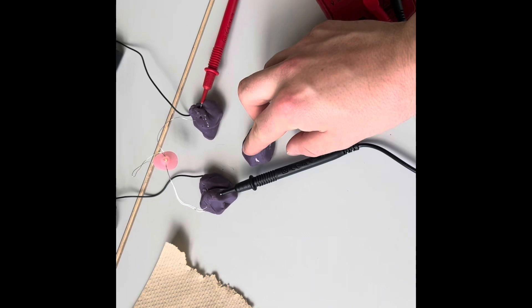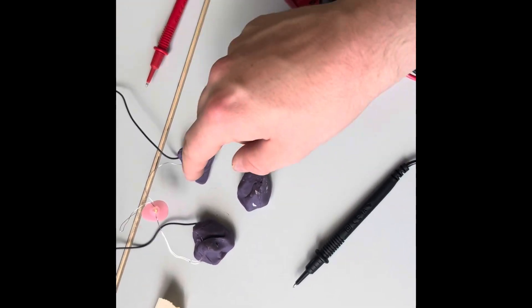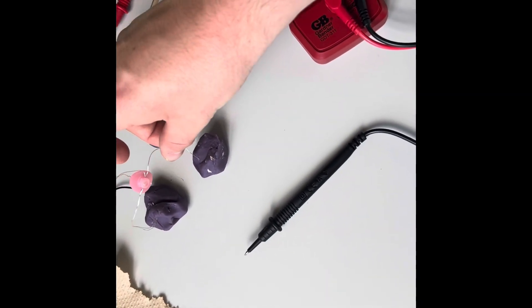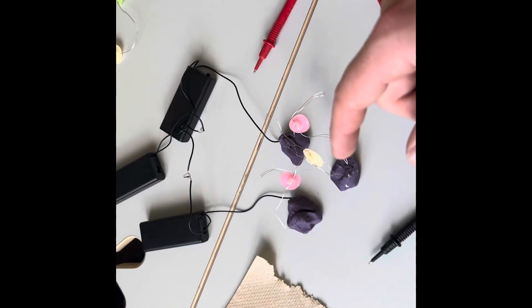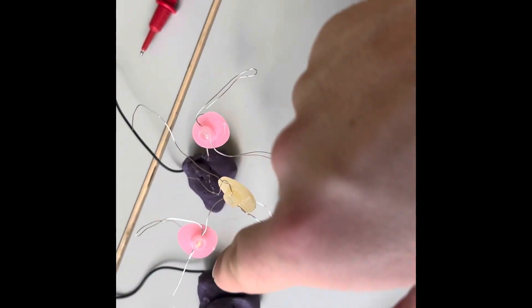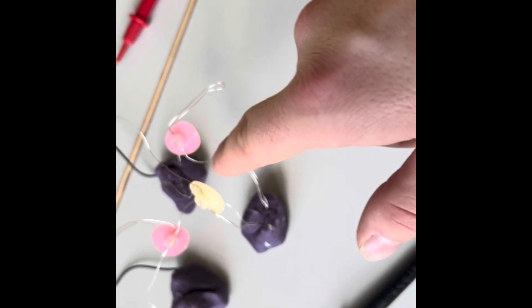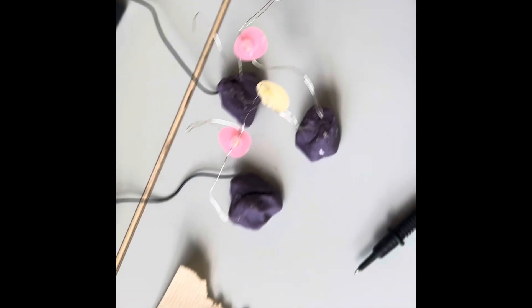Now we're gonna go ahead and add a third piece of play-doh. Go ahead and put one light from here to here and two from here. You want to record the brightness again. As you can see, very very dim. Barely see any in those two and that one's very dim as well.